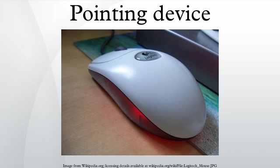Touchpad: A touchpad or trackpad is a flat surface that can detect finger contact. It is a stationary pointing device, commonly used on laptop computers. At least one physical button normally comes with a touchpad, but the user can also generate a mouse click by tapping on the pad. Advanced features include pressure sensitivity and special gestures such as scrolling by moving one's finger along an edge. It uses a two-layer grid of electrodes to measure finger movement — one layer has vertical electrode strips that handle vertical movement, and the other layer has horizontal electrode strips to handle horizontal movements.